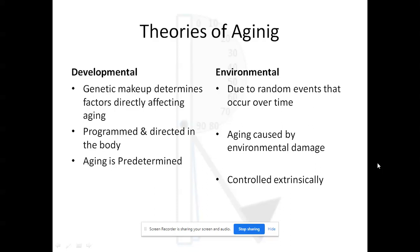The second point is that aging is programmed and directed by the body — it is predetermined by DNA. The environmental factor, however, is not written in our DNA or RNA; it exists outside us. Examples include natural calamities, cyclones, and COVID-19. These are random events that occur over time. COVID-19, for instance, may eventually vanish — we cannot predict how long it will persist in the world.